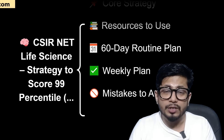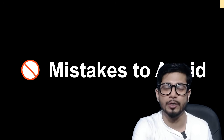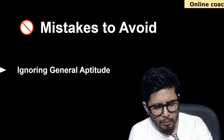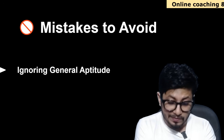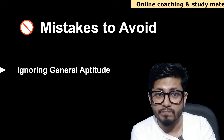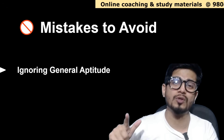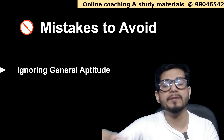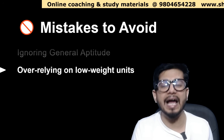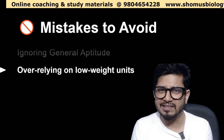Mistakes to avoid is a very crucial topic that nobody tells you. First, do not ignore general aptitude. Many aspirants ignore it completely — even some rank 1 to 10 scorers skipped it because they scored 100 out of 100 in Part C and 40 to 60 out of 70 in Part B. But don't risk it. Second, avoid over-relying on low-weight units. If you devote all your time to units that are not repetitive, that is a waste of time.